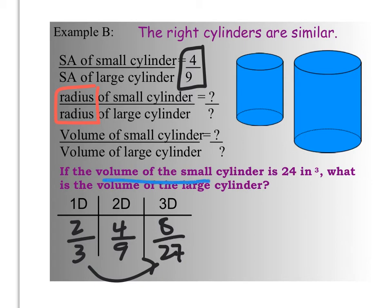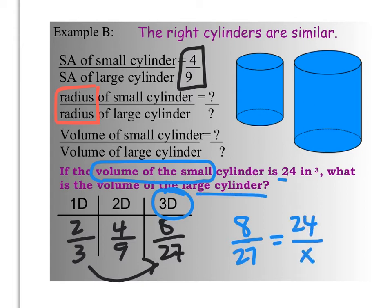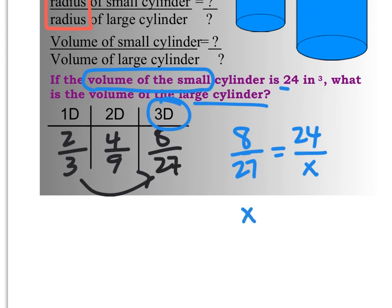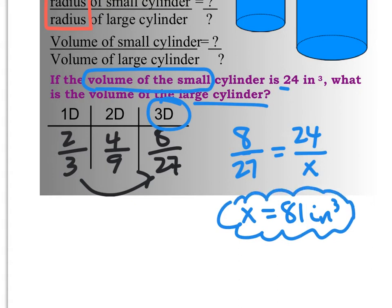It says if the volume of the small cylinder is given, and it's 24, and so volume tells me three dimensions. So, 8 over 27 is equivalent to 24 over x, which is the volume of the large cylinder. Okay, I'm going to see here, if I cross-multiply, it looks like the volume of the large cylinder will be 81 cubic inches.